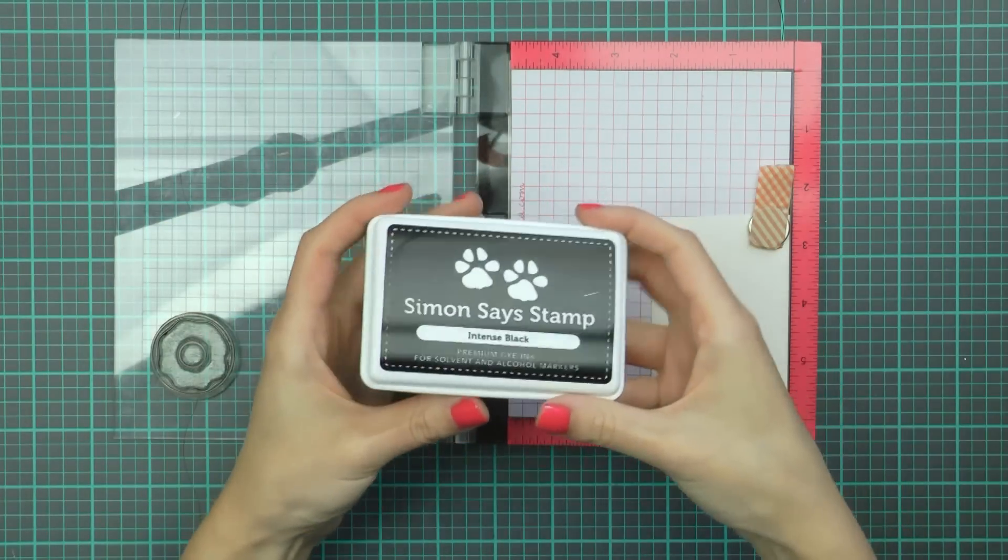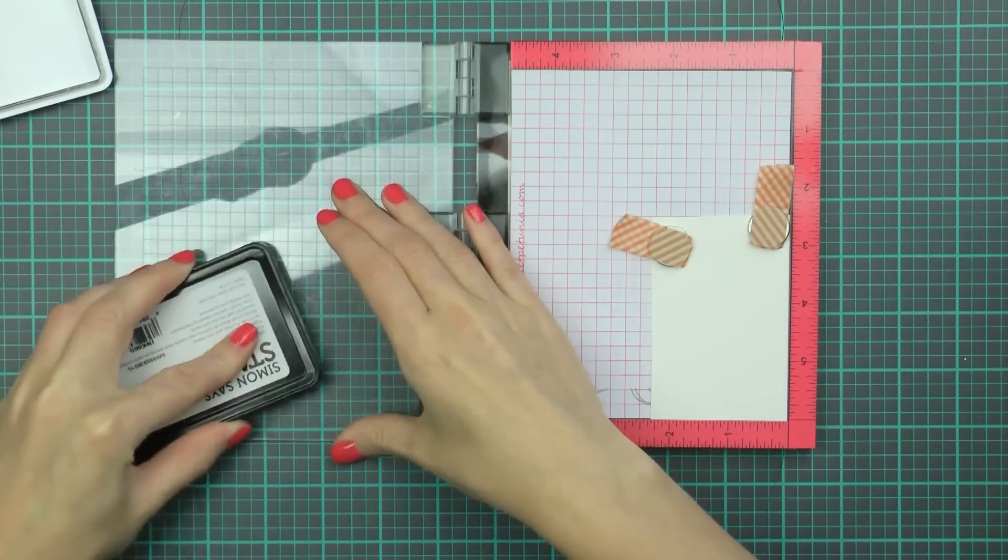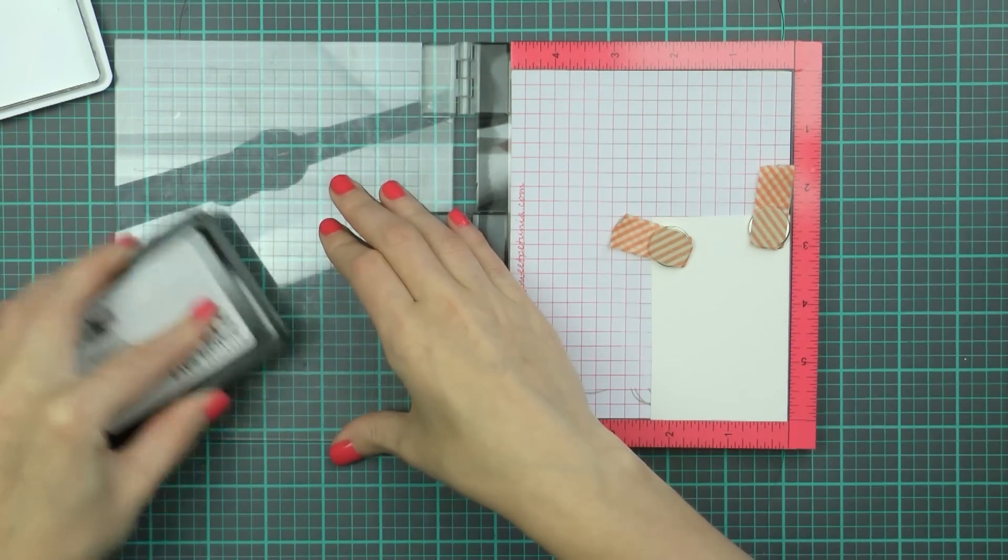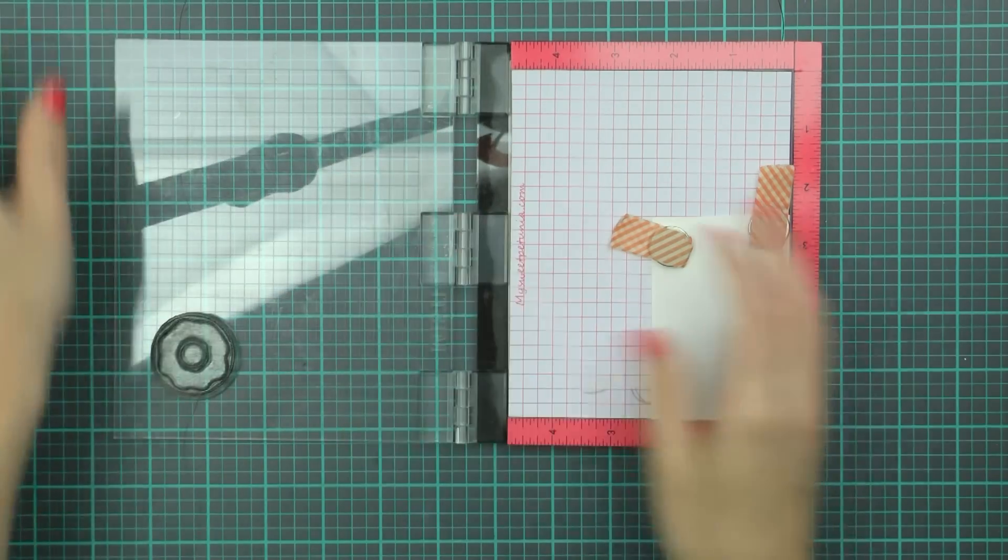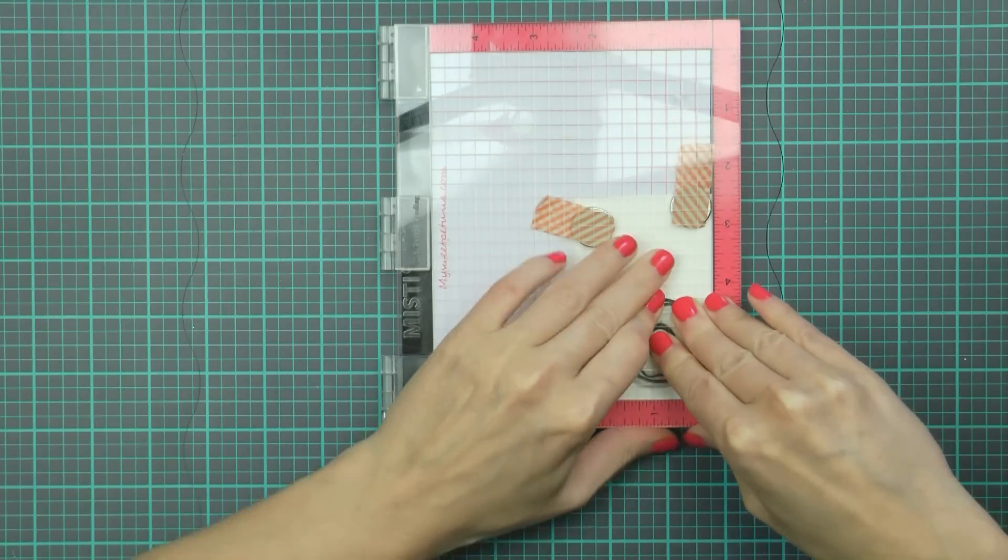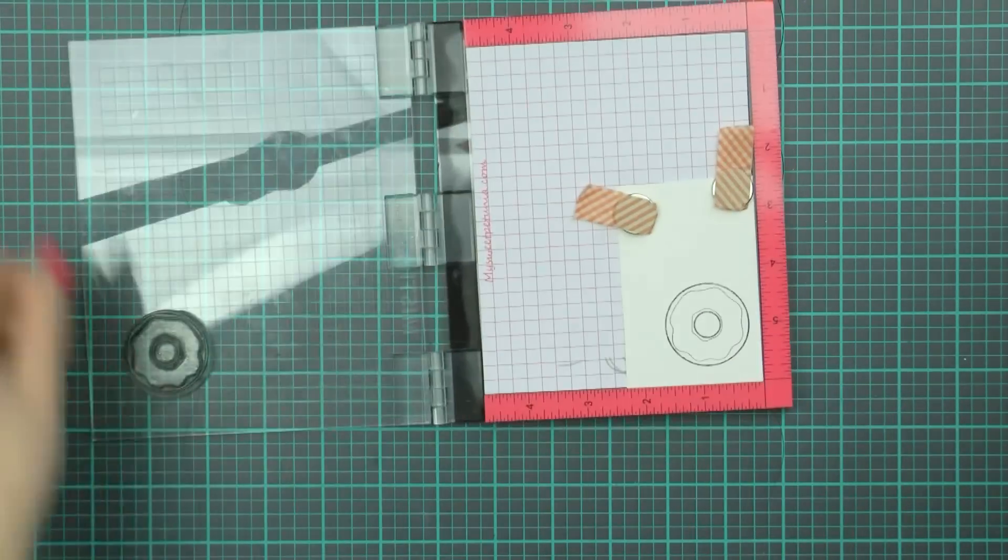I'm going to start by stamping a few images onto watercolor paper and I'm using my mini MISTI today because watercolor paper has some texture to it and usually it's very hard to have a nice and clean impression, so MISTI is super helpful.